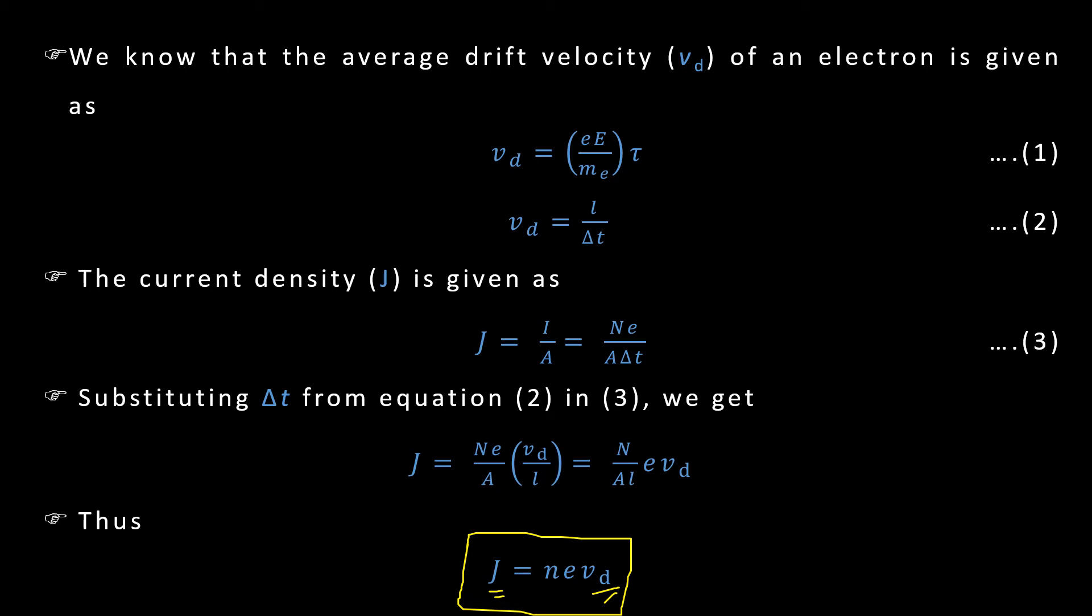This relation says that if you have a uniform cross section of the wire then wherever you check, you check the current density in this cross section or here or here, J remains constant and hence drift velocity everywhere is same. Whichever electron you take, average drift velocity, drift velocity will not change.